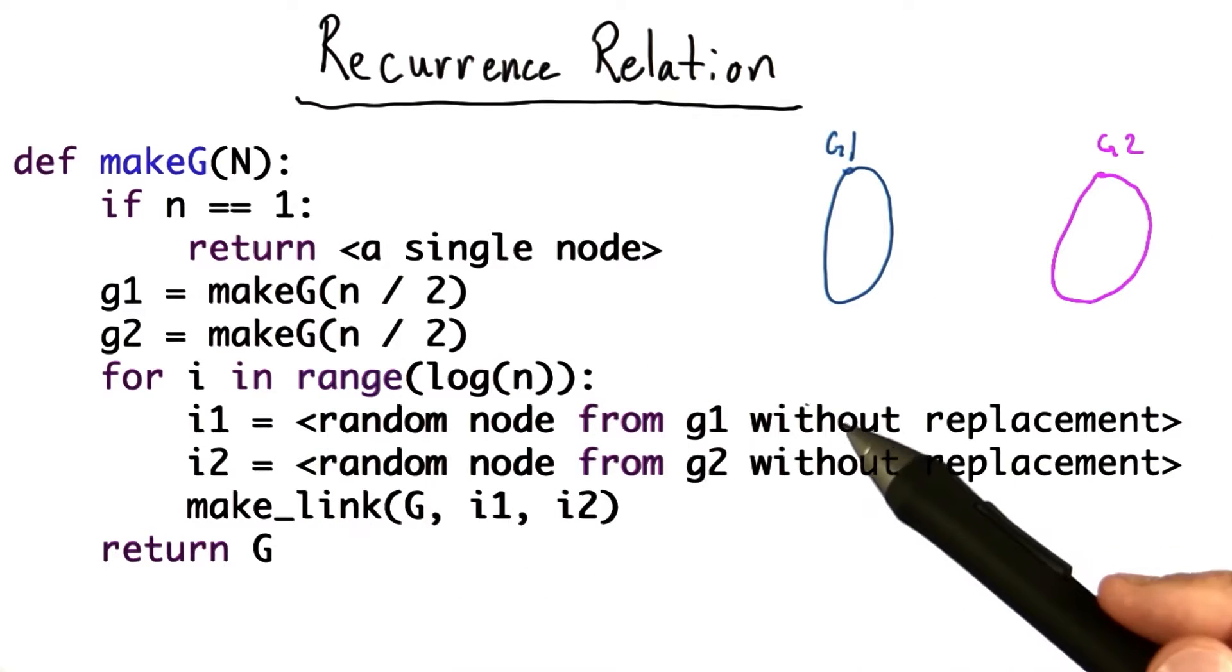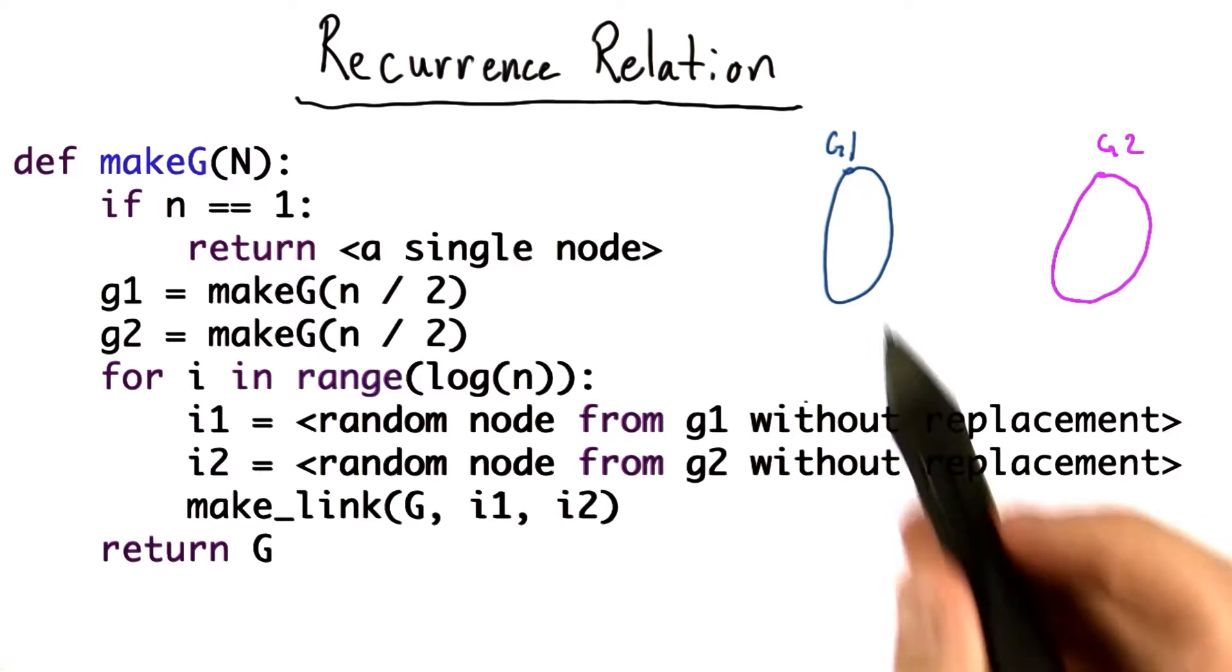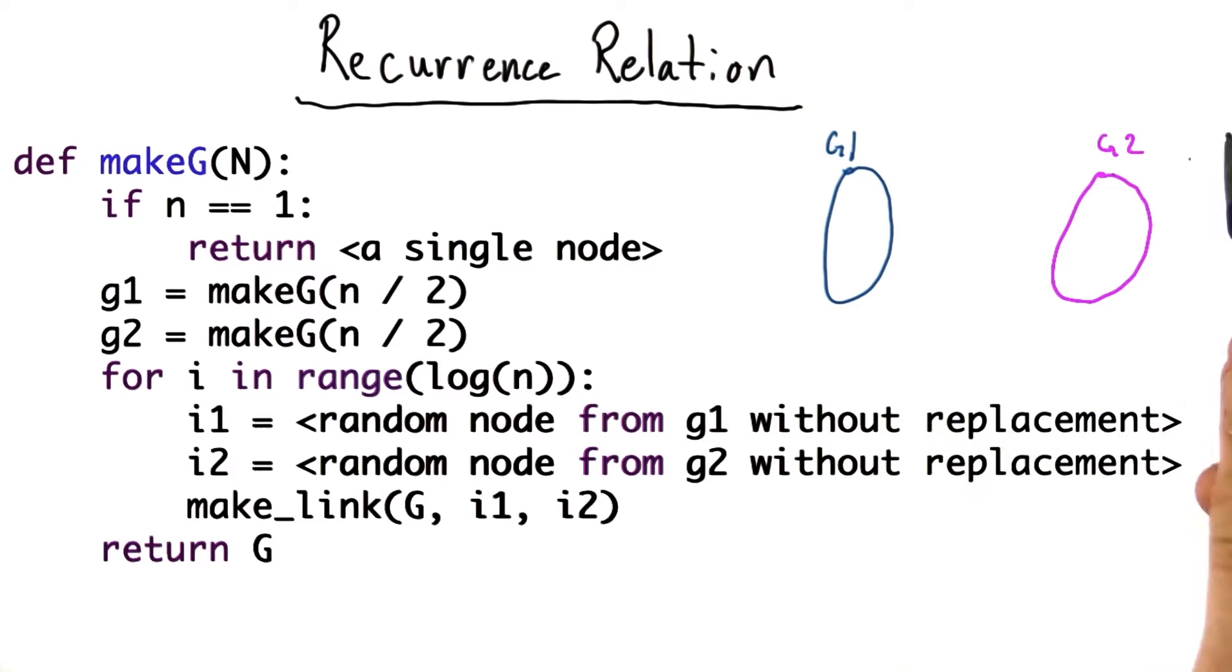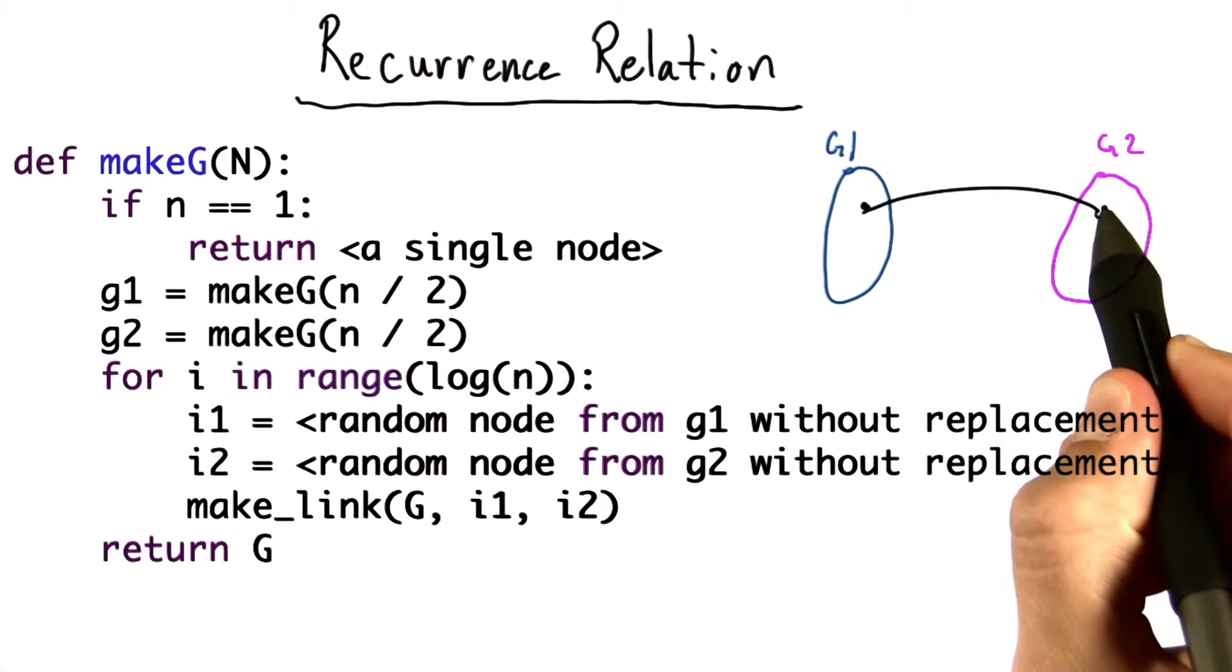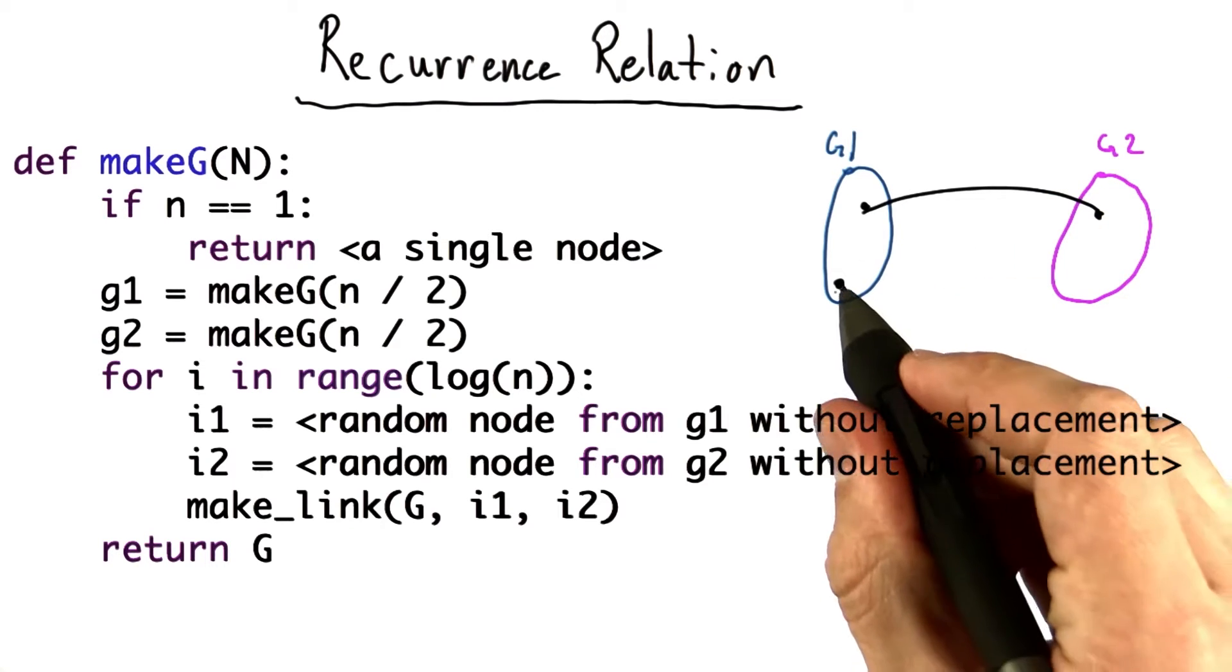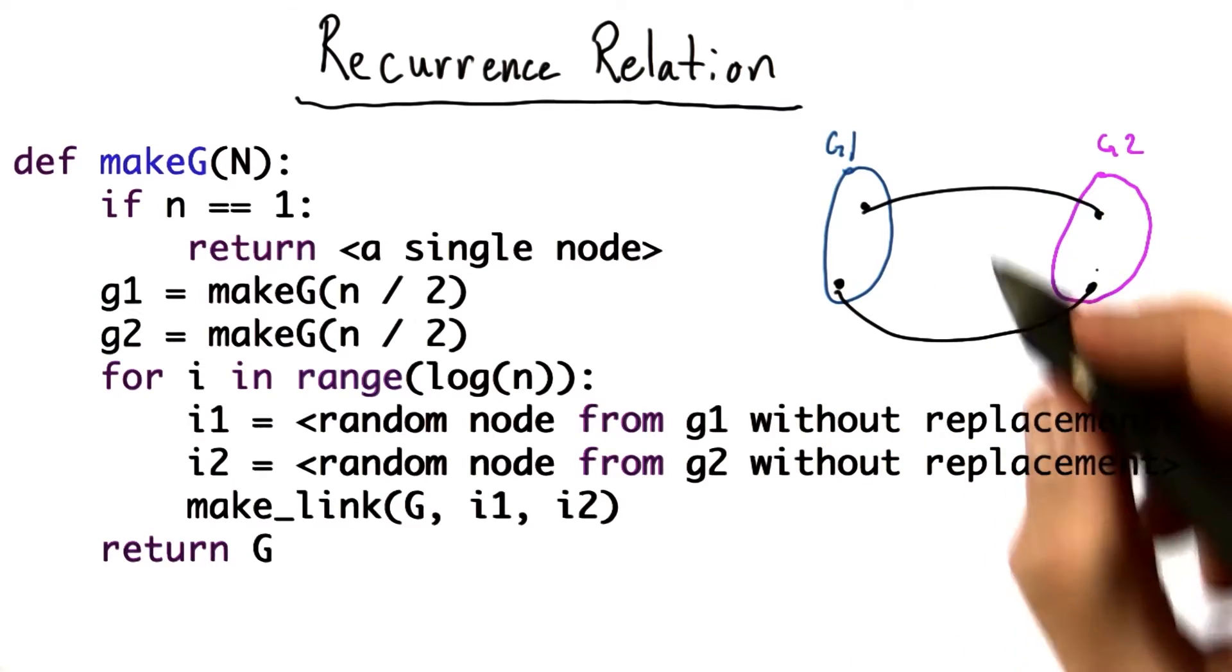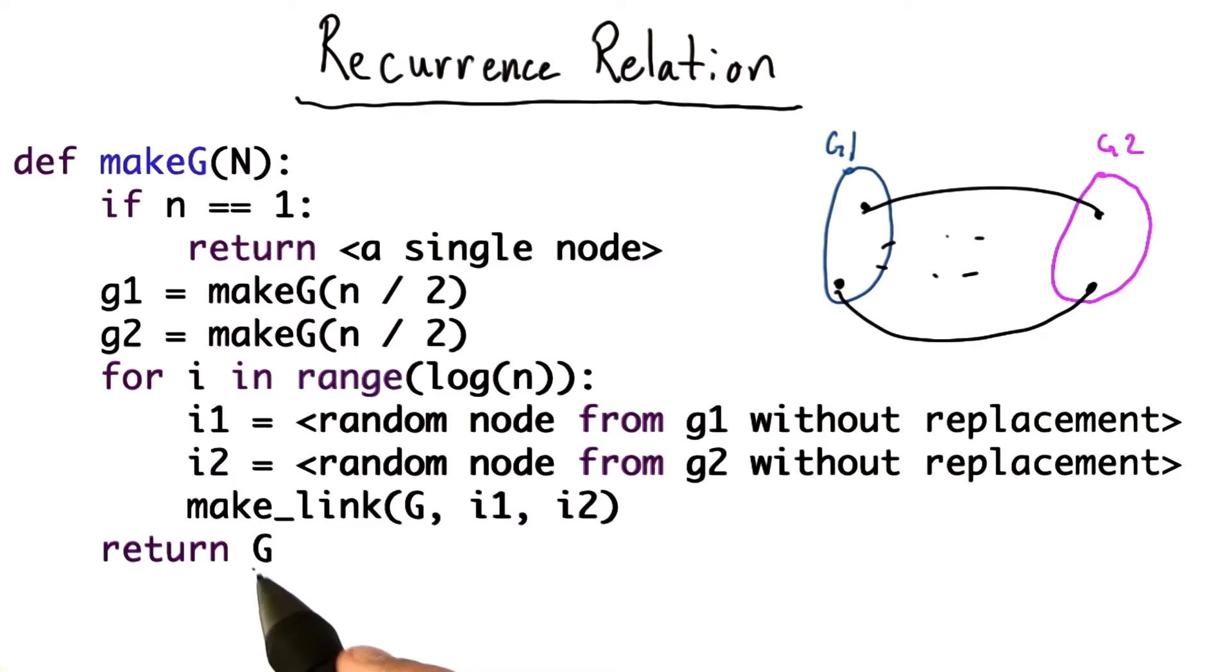For other values, we make a g1 and a g2 that are half the size. And then we make log n connections between g1 and g2 by picking a random point and connecting it with a random node, another random node, and connecting it with a random node, etc. And then we return.